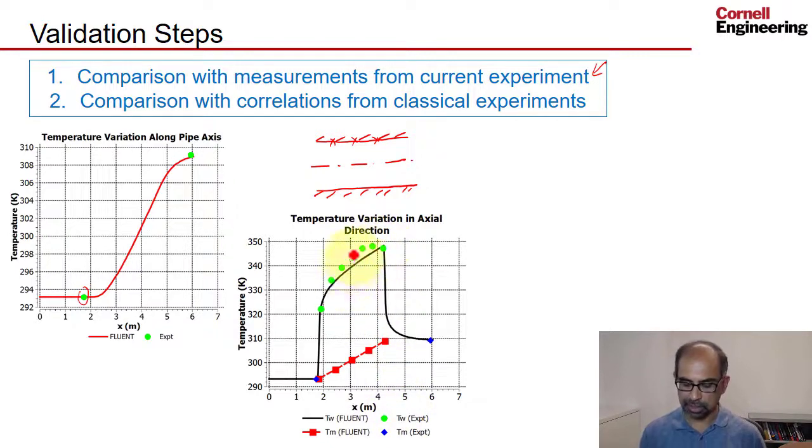The green circles are the experiment. And then this is the variation of the mixed mean temperature in the heated section and that's increasing linearly as it should when you have constant heat flux. So that's again a check on energy conservation.